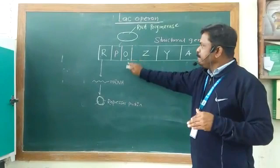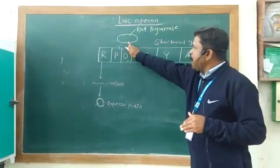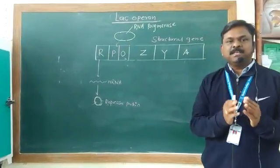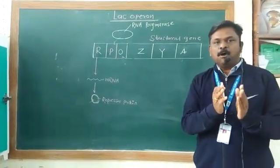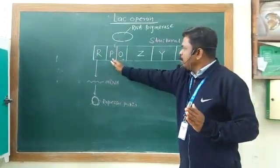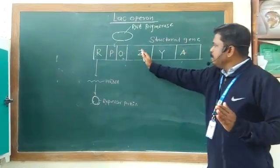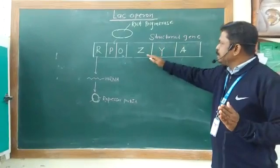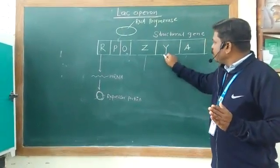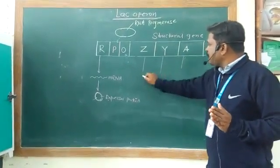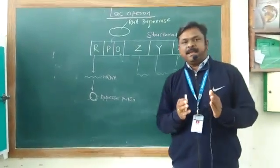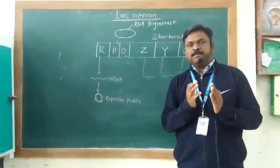Now this repressor protein binds to the operator. When it binds to the operator, the RNA polymerase will not bind to the promoter. As a result, the RNA polymerase blocks, so the RNA polymerase does not move on the structural genes. So the transcription of messenger RNA is blocked.